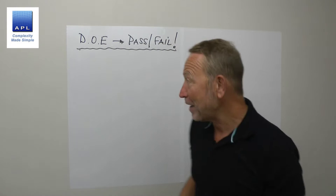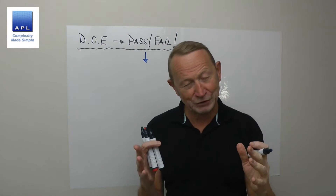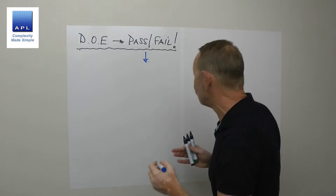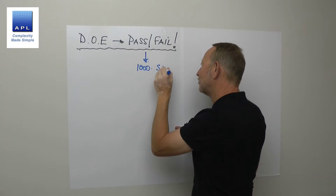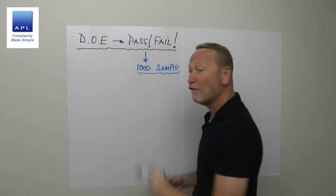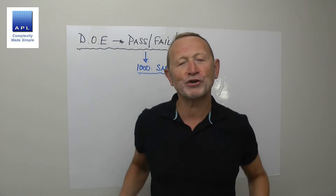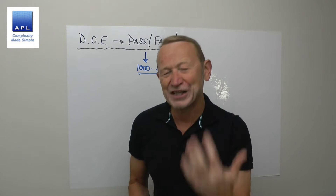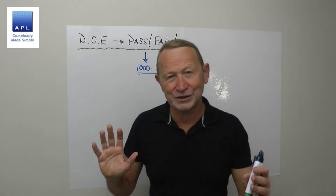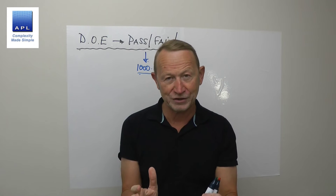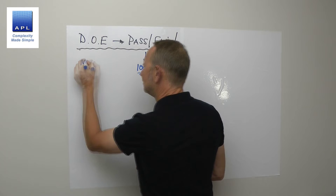Now, the first thing to say about pass-fail is: normally, if you wanted to understand how well or badly a process is running — let's say a new product introduction — you need a sample size of a thousand pieces. This is the problem with pass-fail. With production, we look at a data point and we want to know: is it in tolerance or out of tolerance? And we treat it as pass-fail. The minute you treat data as pass-fail, you destroy the information that's in it.